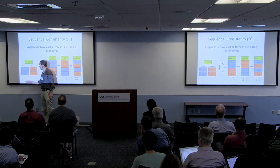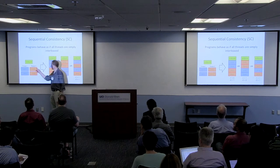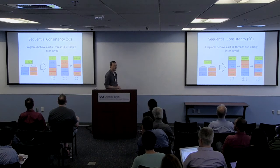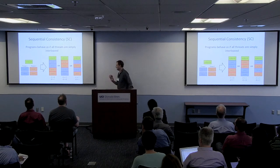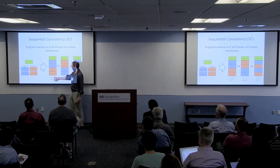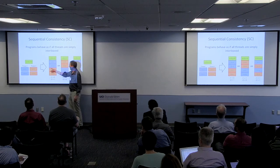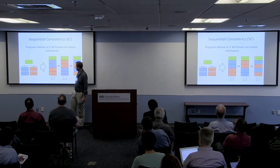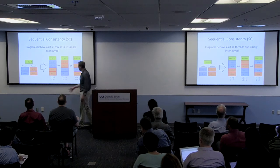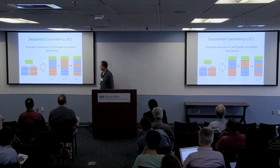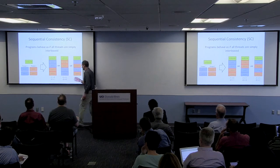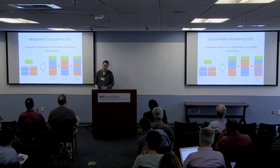Thread one does an assignment to X first and then reads Y. Thread two does an assignment to Y first and then reads X. Under a sequentially consistent memory model, there are three possible outcomes. The first is thread one runs first, in which case R1 is zero and R2 is one. Another outcome is thread two runs first, giving R1 is one and R2 is zero. The third is they both do their assignments first, then their respective reads, giving R1 and R2 both equal one.